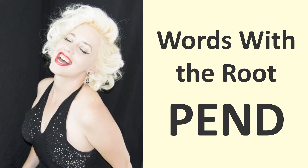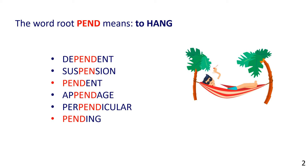Words with the root PEND. The word root PEND means to hang. Some examples are: Dependent, Suspension, Pendant, Appendage, Perpendicular, and Pending. Let's look at them in detail.